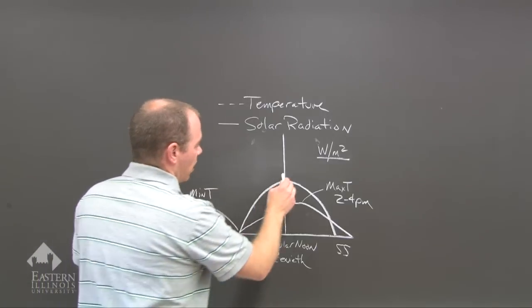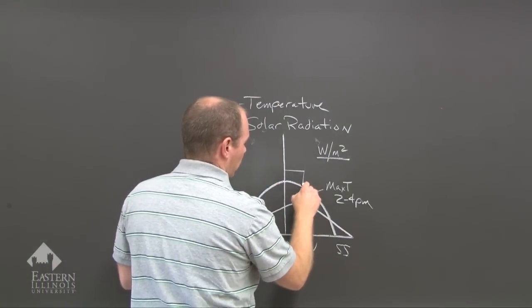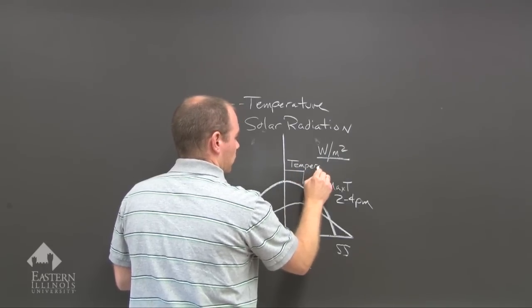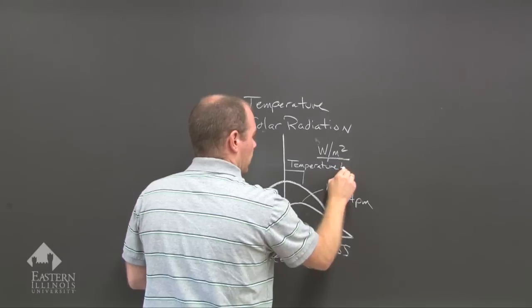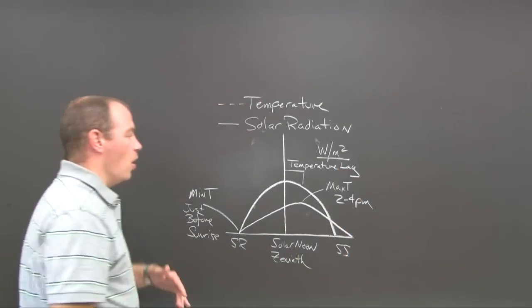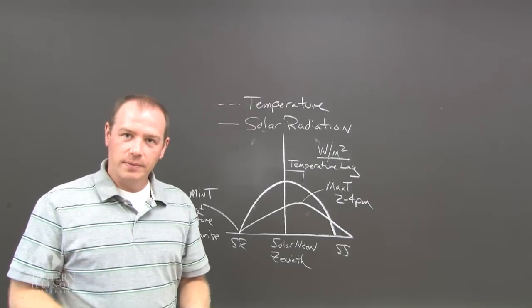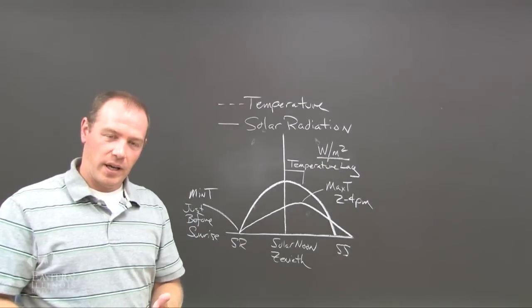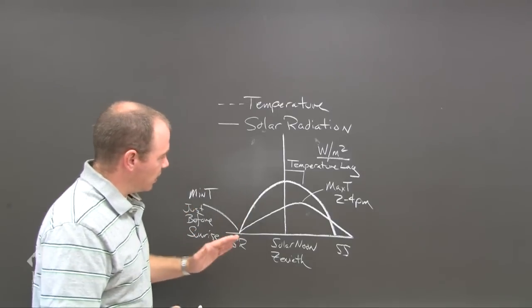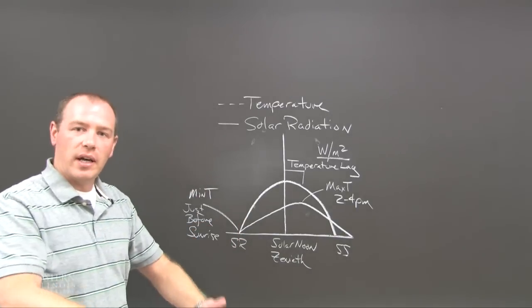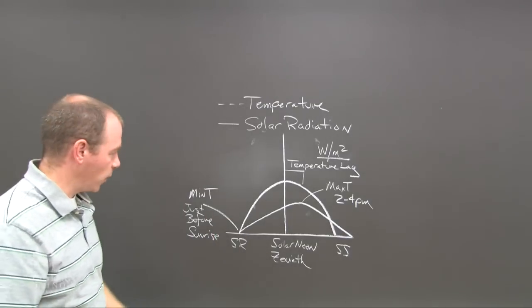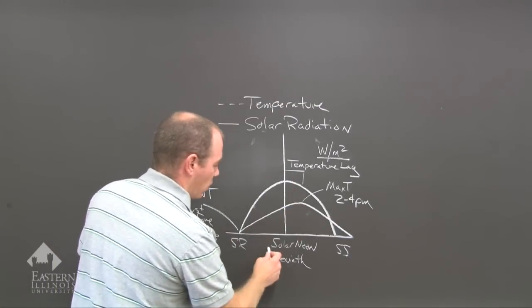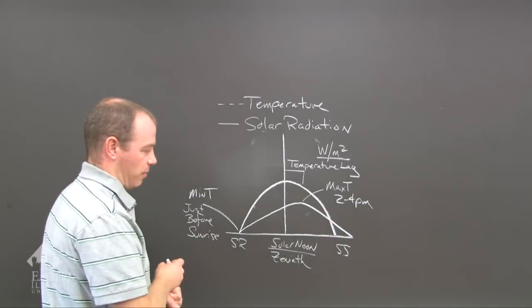So there is a 2 to 3 hour lag, a temperature lag. When the sun rises, we get a temperature lag. So in order to get the temperature going, you have to have enough radiation at the surface to accumulate. That temperature rises, and then 2 to 3 hours after solar noon, we get the maximum temperature.